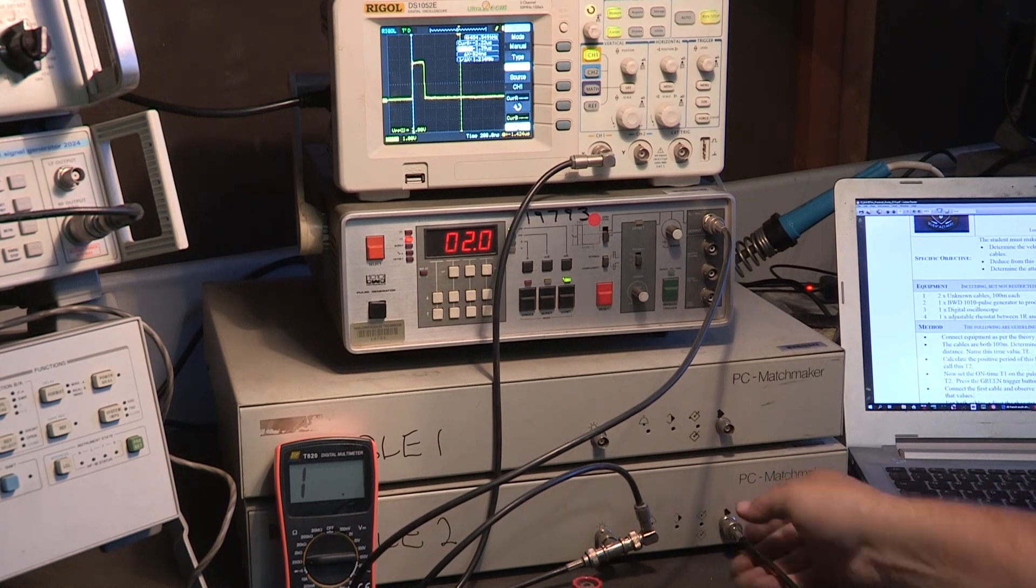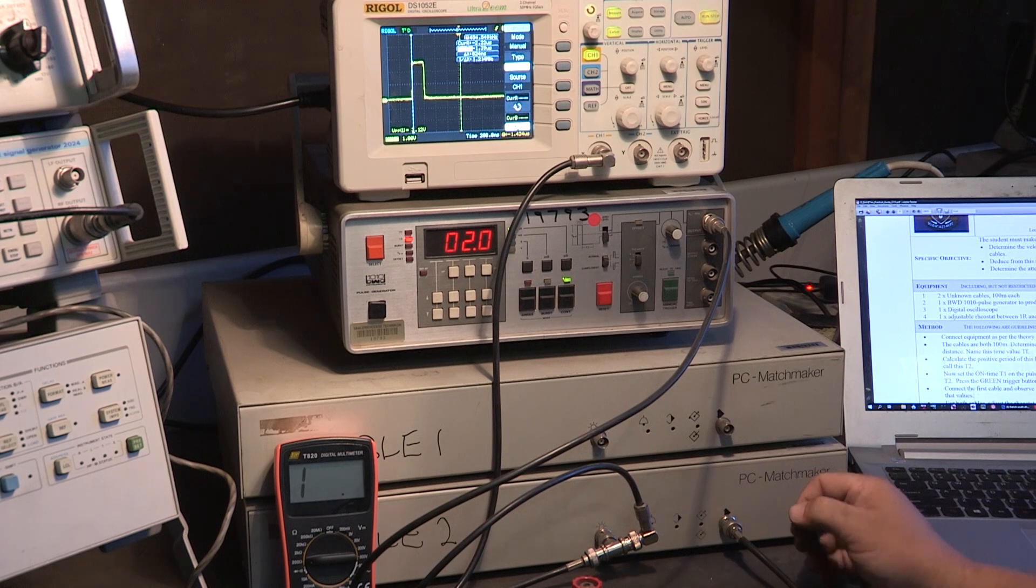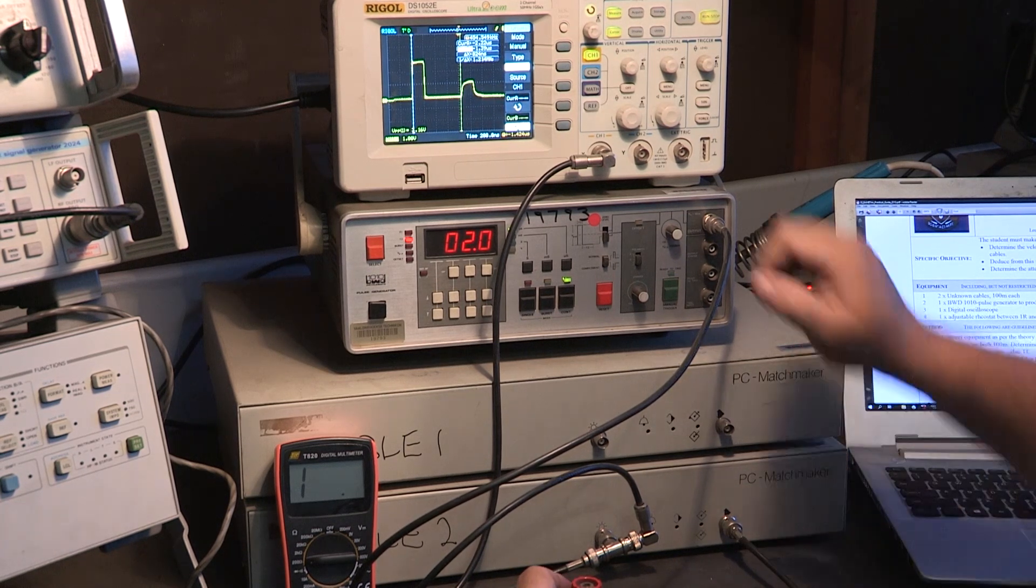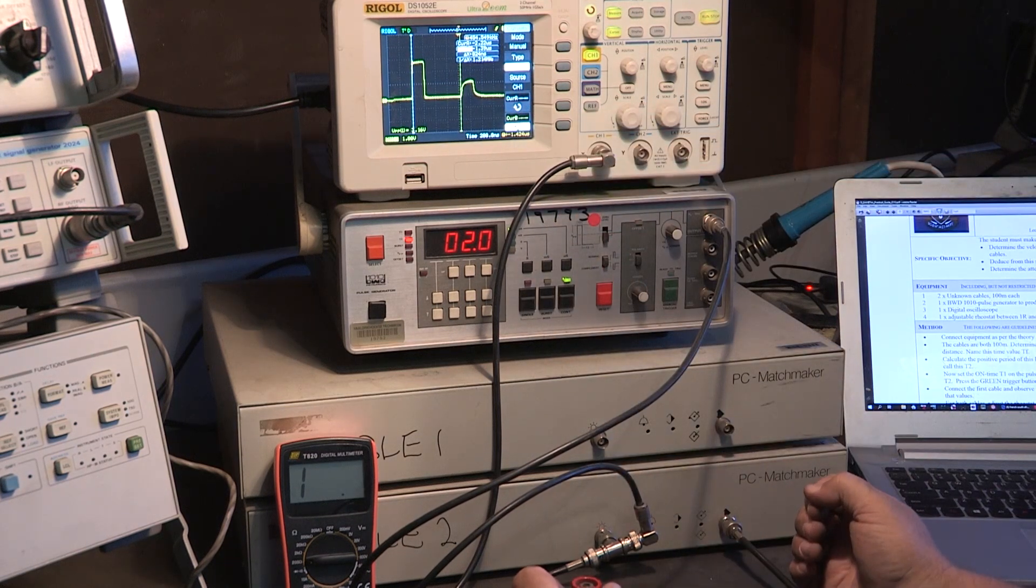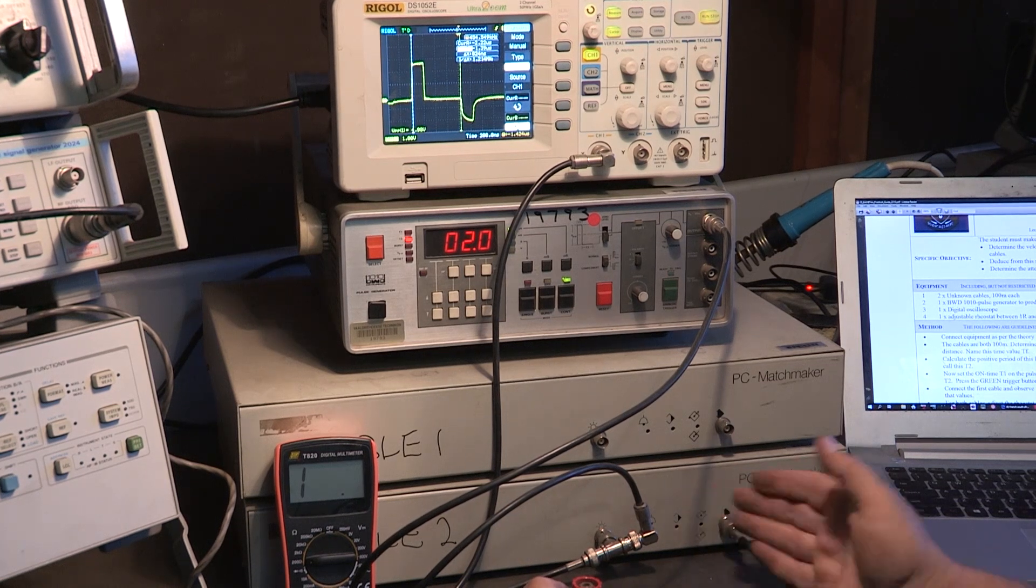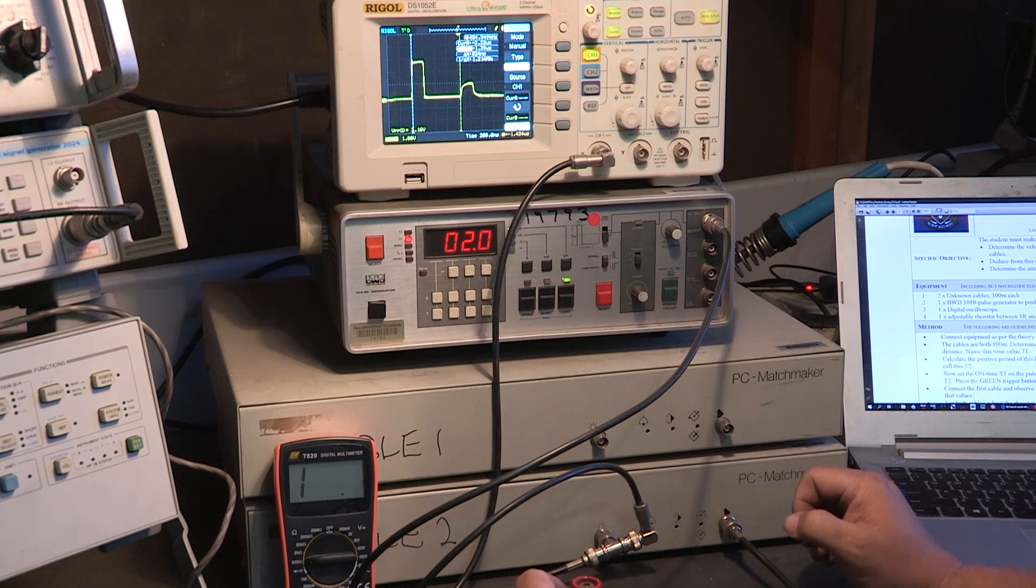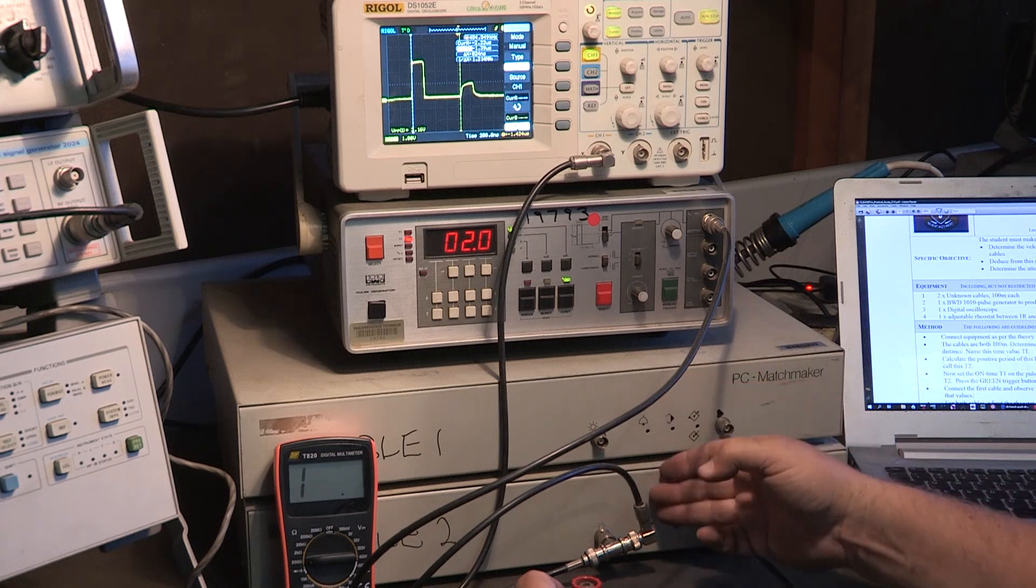Putting the resistor back, let's just confirm for you guys: positive pulse, resistor is now bigger than the impedance of the cable. Negative pulse, resistor here is smaller than the impedance of the cable. The change in time is because of the velocity factor between the two cables.